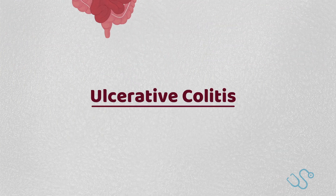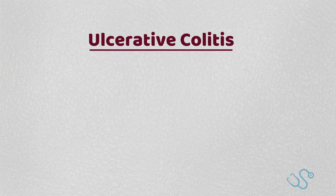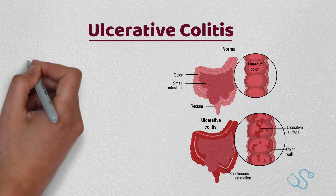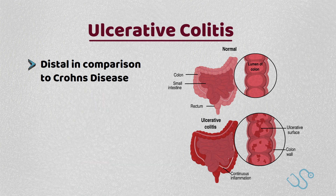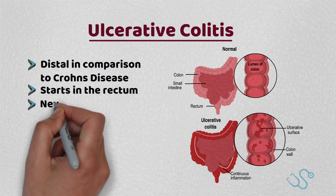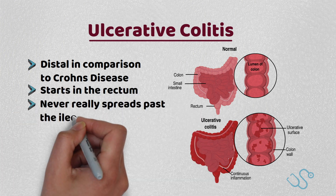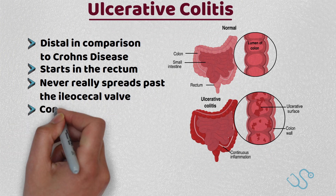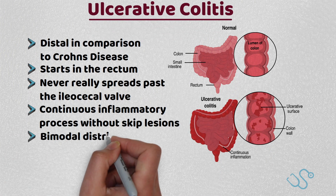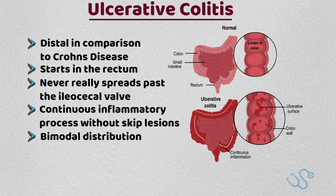Let's start with ulcerative colitis, where the inflammatory process is distal in comparison to Crohn's disease. The disease often starts in the rectum and works proximally, never really spreading past the ileocecal valve. It's thought to be a continuous inflammatory process without skip lesions, with a bimodal distribution of presentation usually between 15-26 years and 55-65 years.